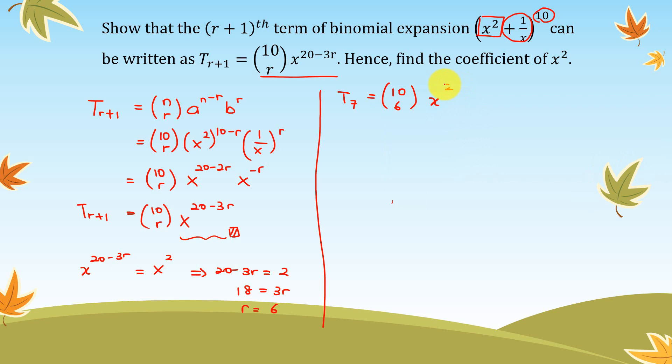We have T_7 equal to (10 choose 6) x^(20 - 3 times 6), so what do we have is (10 choose 6) x².